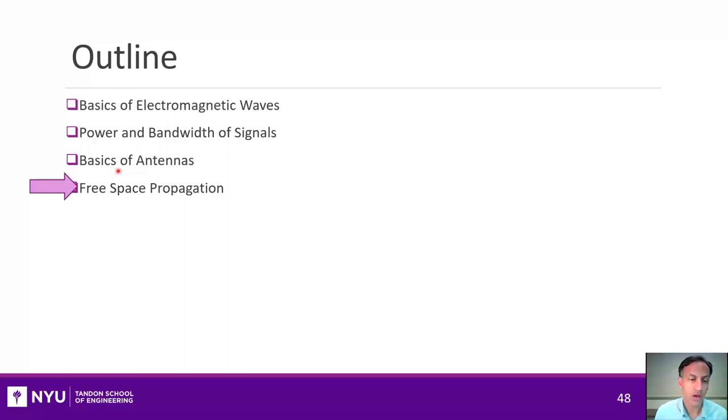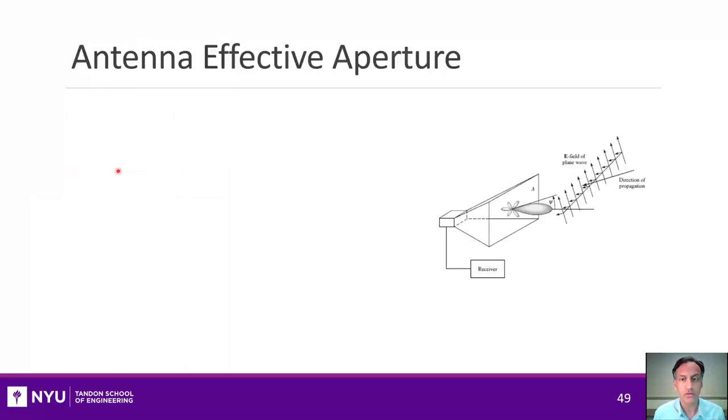Alright, I want to wrap up this unit with a discussion of a very important property of propagation, which is propagation in free space. Free space meaning propagation without any obstacles. We'll deal with propagation in more complex environments in the next unit, but this is a good place to start. To understand free space propagation, the first thing we need to do is define what we call the antenna effective aperture.